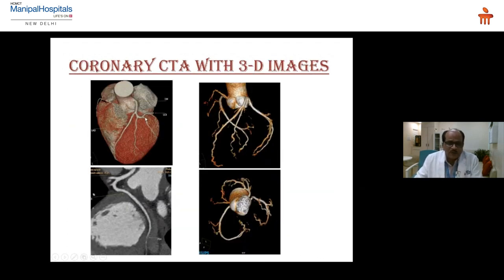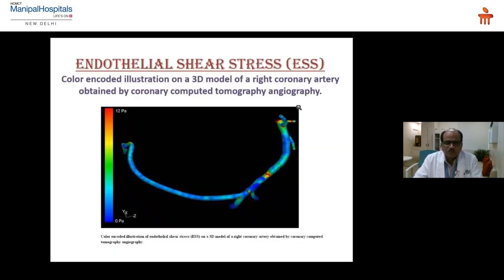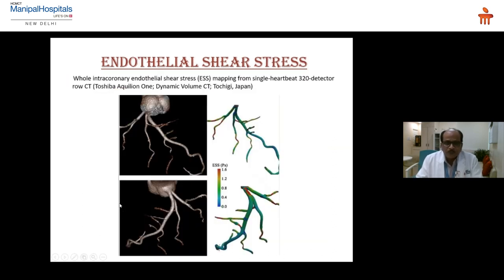These are three-dimensional images of the heart showing coronary arteries, providing excellent 3D volume data for ESS measurement. Various data shown in Pascals: the normal value of ESS is 1.5 to 3 Pascals — beyond that is high, and below that is low. This is the left coronary artery with color mapping showing how ESS can be calculated and visualized as a color map for measurement.